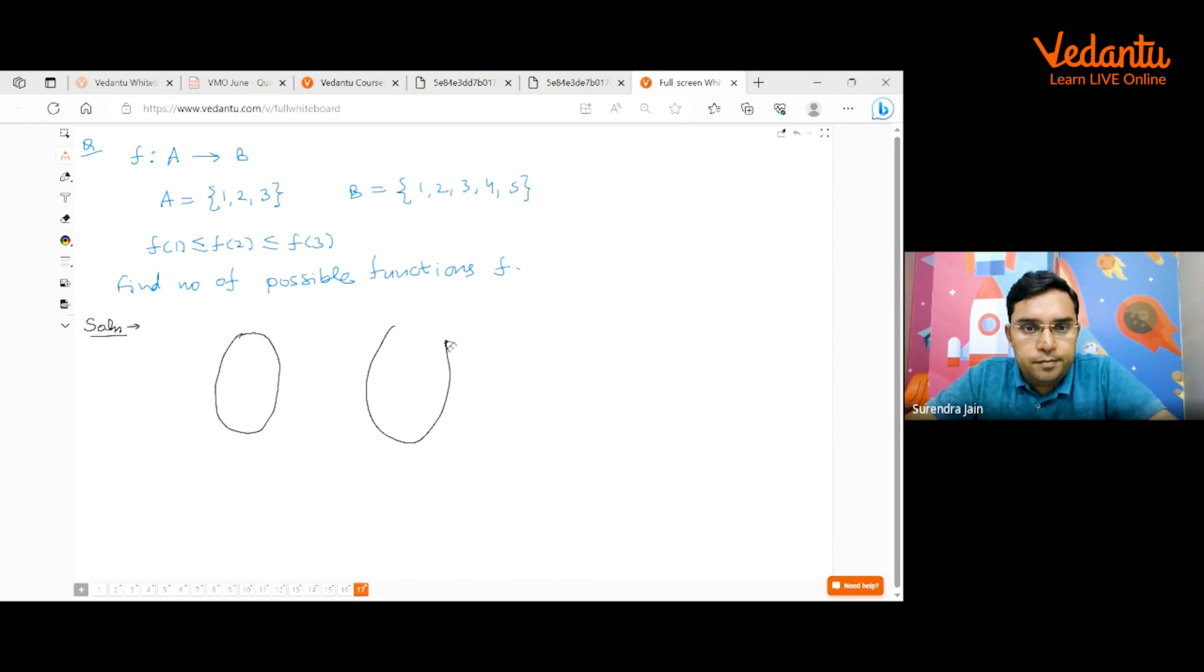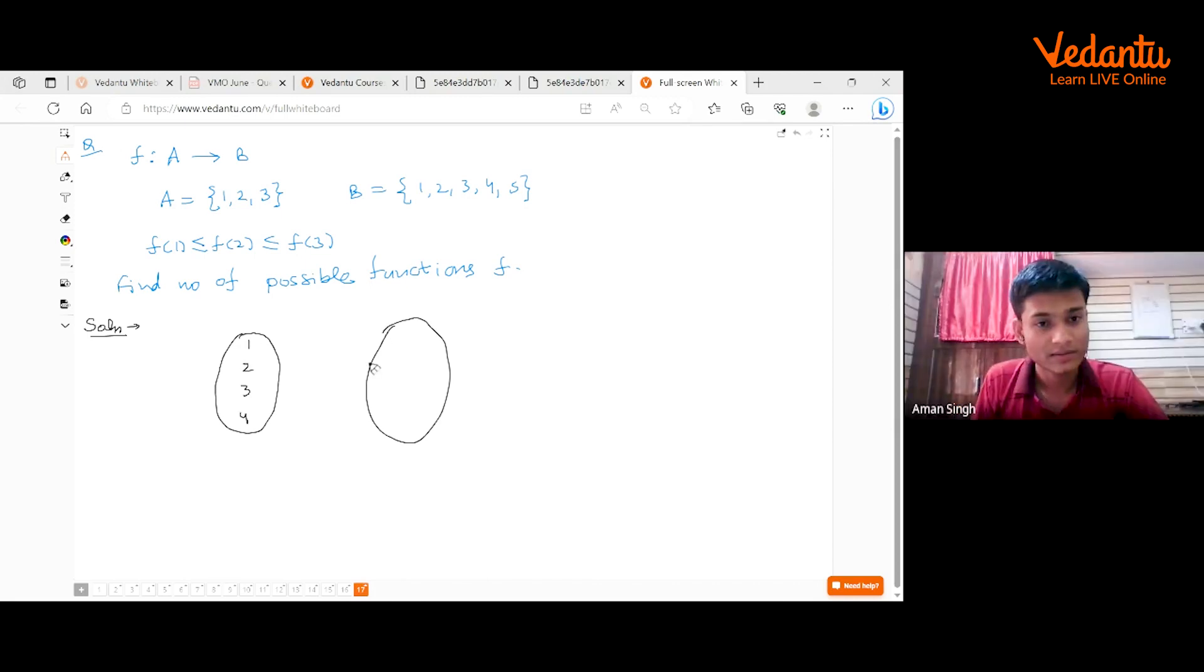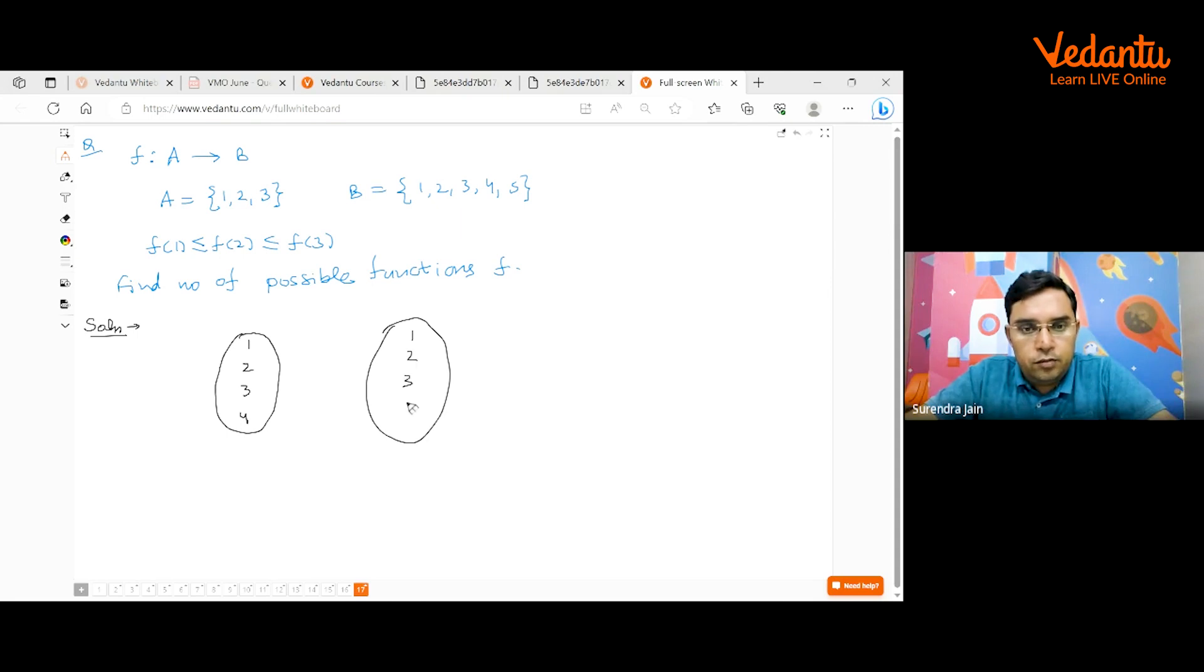So which question you are now doing? One, two, three, four. A is having 1, 2, 3 and 4. And B is 1, 2, 3, 4, 5. What are you saying? They all are connected to one element. Yes. Five cases.